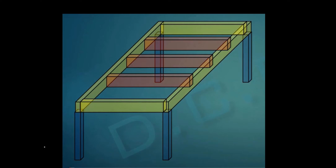Suppose you have a beam-column arrangement. This is your primary beam — the beam connected to the column. This is called a secondary beam because this beam rests on another beam. The primary beam takes the load from the secondary beam; the slab is over this beam and the load from the slab is transferred through the secondary beam to the primary beam.